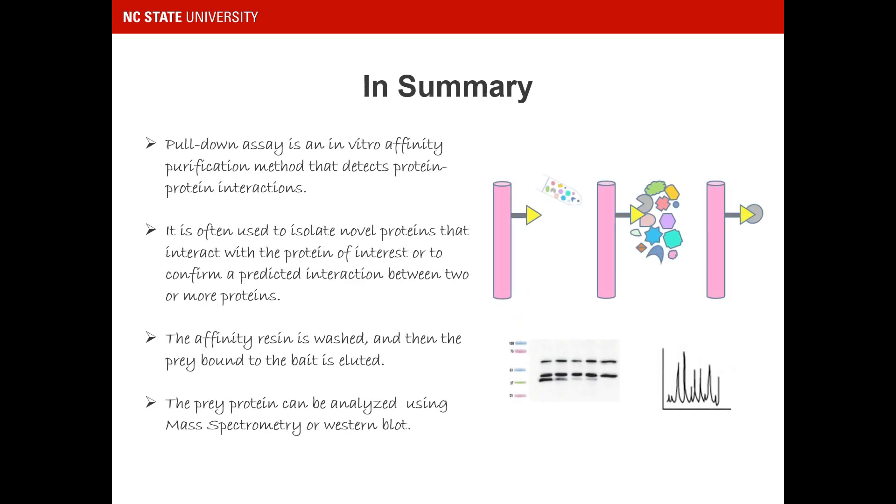In summary, Pull-down assay is an in vitro affinity purification method for detecting protein-protein interactions. It is often used to isolate novel proteins that interact with the known protein of interest, or to confirm a predicted interaction between two or more proteins. The affinity resin is washed, and then the prey bound to the bait is eluted from the resin. The proteins in the eluted sample can be analyzed using mass spectrometry or Western blot.